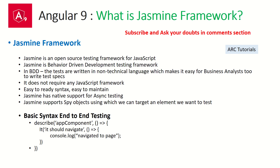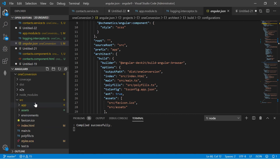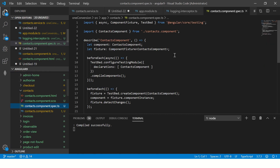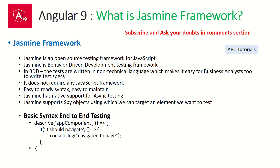Jasmine supports spy objects, meaning we can capture or target a particular element on screen that we want to test. When you look at your code you will see describe statements and it statements. These are written in simple plain English — that's how we write test scripts in Jasmine. It will always have the structure of a describe block describing what we are trying to test, with the use cases written inside using it blocks. With Jasmine, it's easy to write native test scripts.